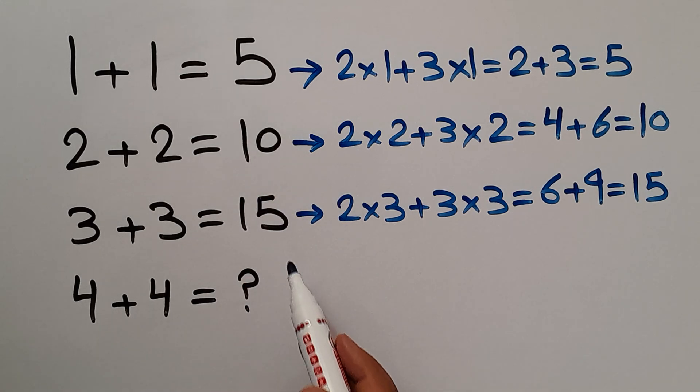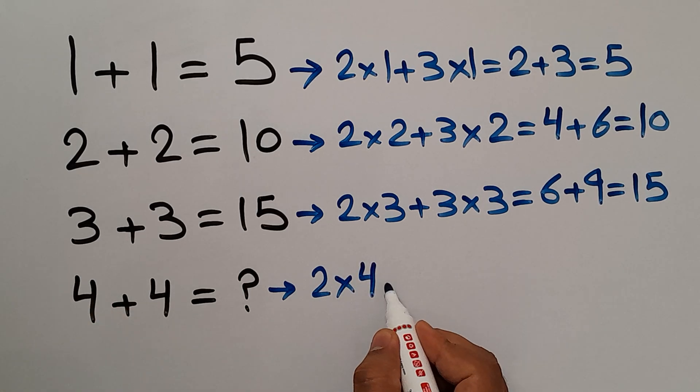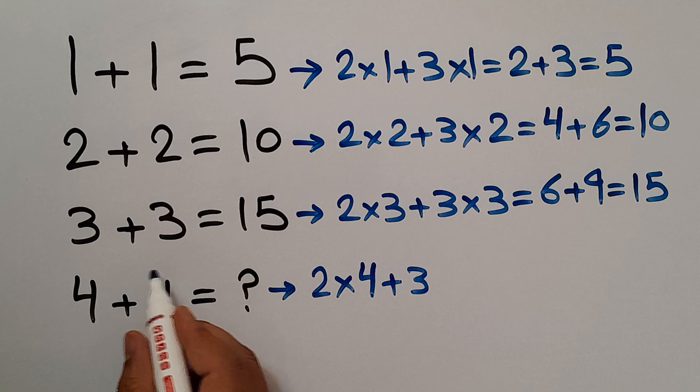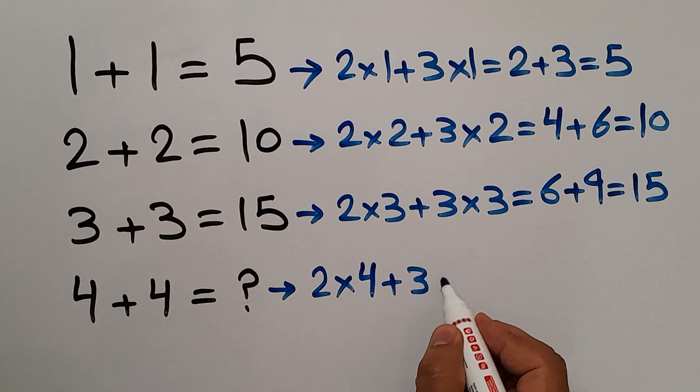Let's use this pattern to find the missing number. 4 plus 4 equals question mark. Okay? So, therefore, 2 times the first number, which is 4, plus 3 times the second number, which is 4.